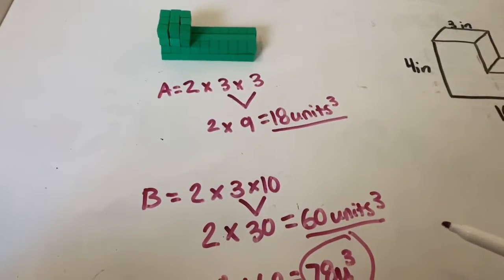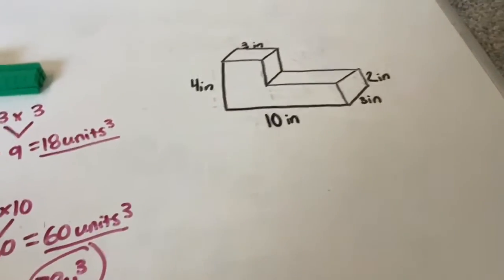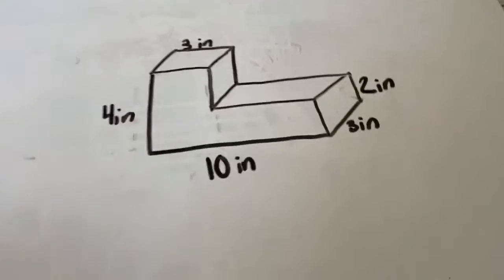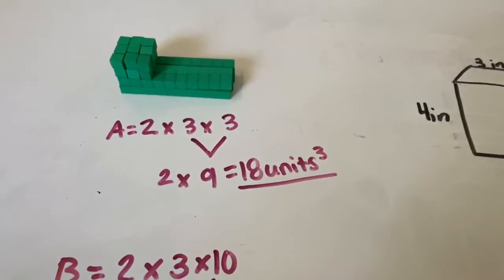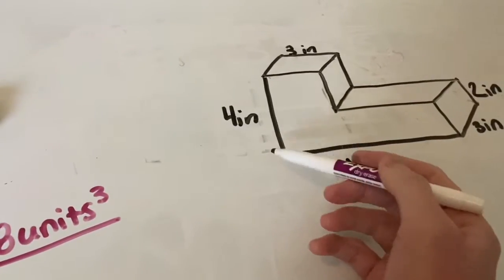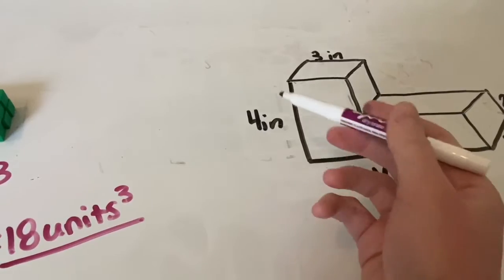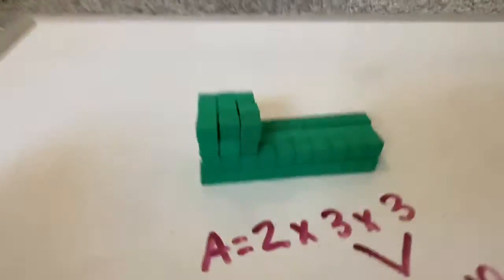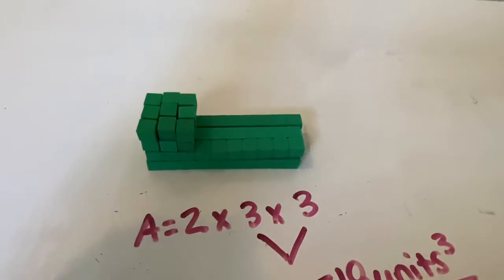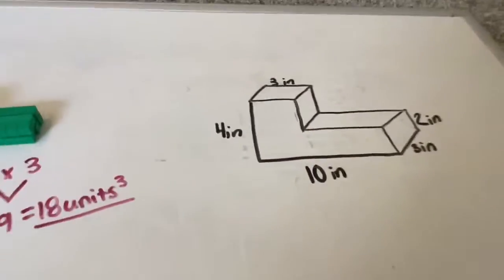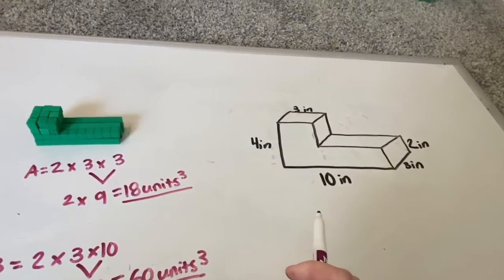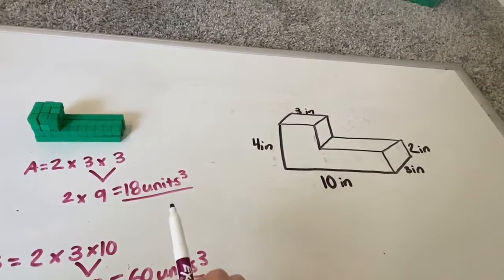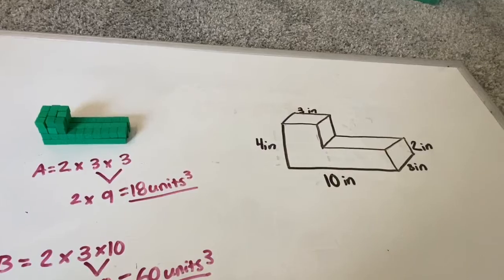Now that we finished with our concrete, we're going to move over to our representation of the same problem. This is an image and it shares the same attributes as this concrete example. So you can see that this is four inches. We're saying inches instead of units. Four inches in height. This is four unit cubes in height. This has three inches here. This has three units here. And so on. So these are the same things except here we're representing it with inches. And here we were able to count our unit cubes.